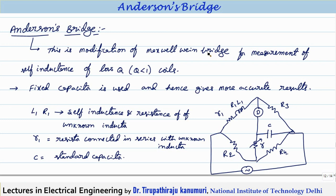In this bridge, one extra junction is formed. The junctions are A, B, C, D, and one extra junction E, so more components are involved. L1 and R1 are the self-inductance and resistance of the unknown inductor. R1 is the resistor connected in series with the unknown inductor. C is the standard capacitor of constant value, and R2, small r, and R3 are non-inductive resistors.